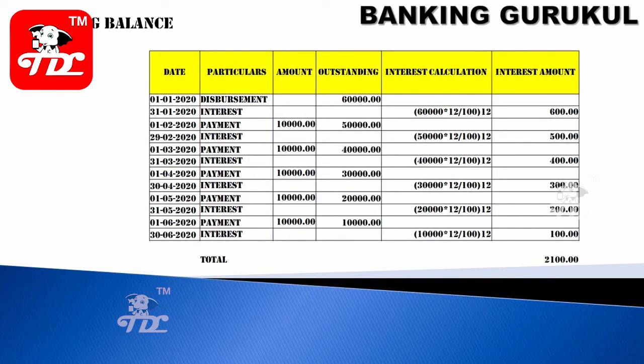In the reducing balance method, the first month is also 600 rupees — same as flat rate. But from the second month, the interest decreases: 500, 400, 300, 200, 100 — because my outstanding balance is decreasing as I pay 10,000 rupees each month: 50,000, 40,000, 30,000, 20,000, 10,000. So my total interest over six months is only 2,100 rupees.